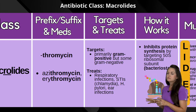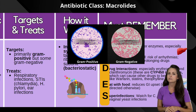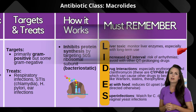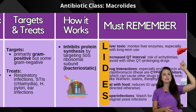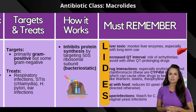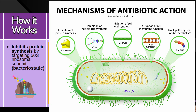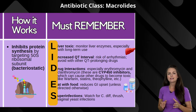Now, what does this group mainly target? It primarily targets gram-positive bacteria, but it can also go after some gram-negatives, making it really good at treating respiratory infections, STIs — particularly chlamydia — H. pylori, and ear infections. It works by inhibiting protein synthesis, targeting the 50S ribosomal subunit, giving it a bacteriostatic effect.